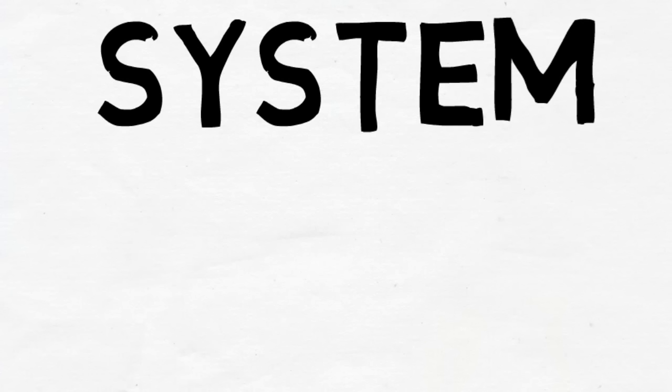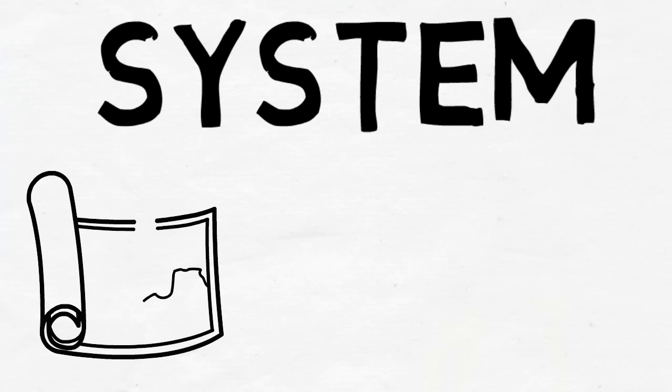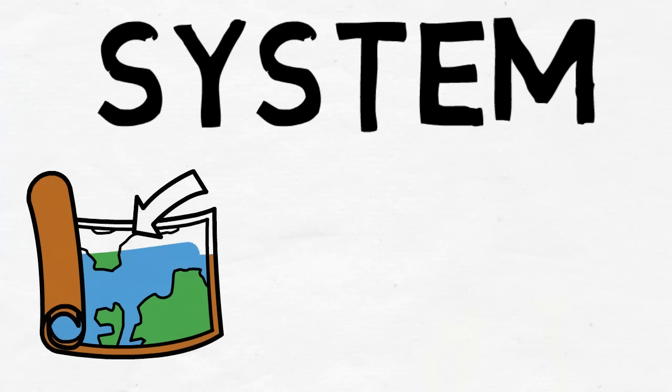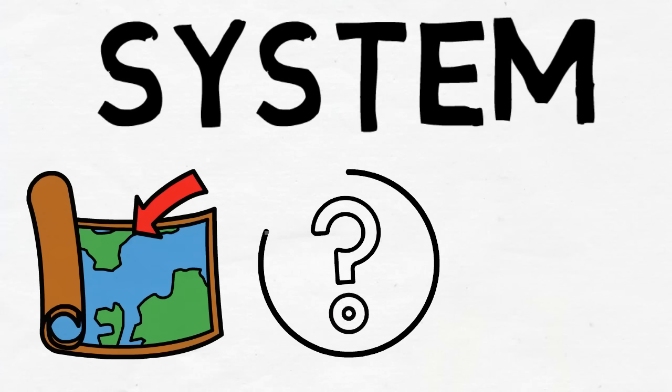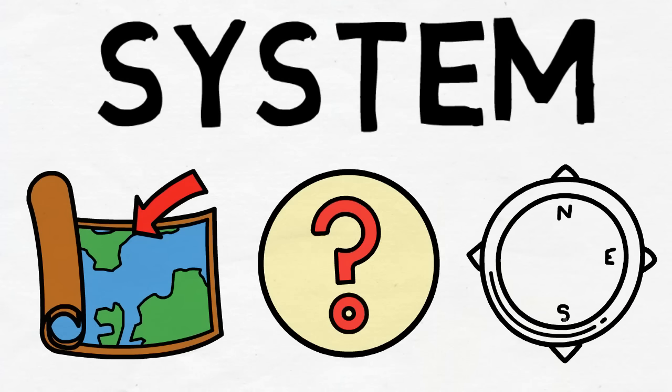Now you might be wondering, how does someone create a good system for themselves? Since everyone has a different set of circumstances, each person has to make their own unique system. But there are three steps everyone should follow. Firstly, you want to pick in which direction you want to go in. Secondly, you want to find out how to get there by asking good questions. Thirdly, you need to experiment with the answers and readjust. I'll explain what I mean in a second.